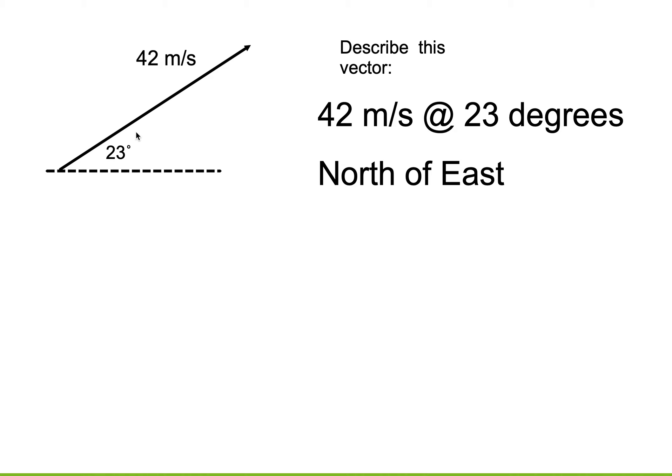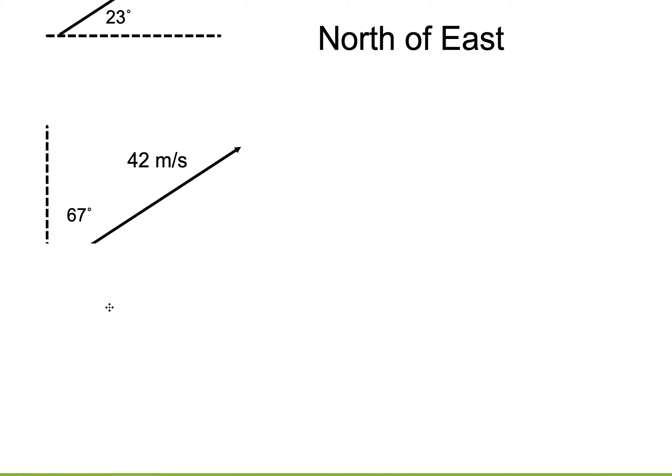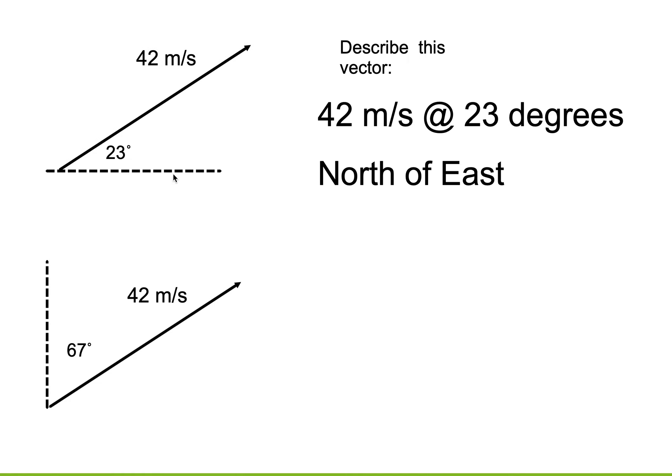There's another way that I could actually describe this vector. Instead of saying that it's 23 degrees north of east, couldn't I draw this vector out like this? So if this is 23 degrees, I can make a right angle here. This would be 67 degrees. Everybody sees that, right?